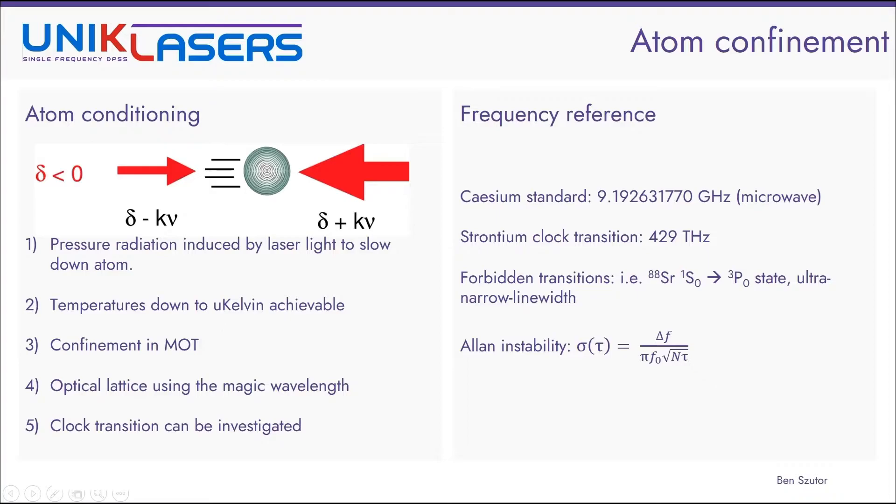Now, the current time or frequency reference that we usually use is the cesium standard, which is at 9.19 GHz. Since it is in the microwave range, we use this standard to define the second. As one example, the strontium clock transition is 429 THz, which is the frequency of a forbidden transition from a singlet to a triplet state, which is inherently very narrow line width. So using this much higher frequency, we can assume better accuracy. As the Allan instability shows here on the bottom, the instability is proportional to the line width. So the lower the line width, the lower the instability. Therefore, the better the stability is. And we also have n, which is the number of trapped atoms, and tau, which is the integration time. So if we inspect the atoms for longer or if we have more atoms confined, then we can also achieve better stability.